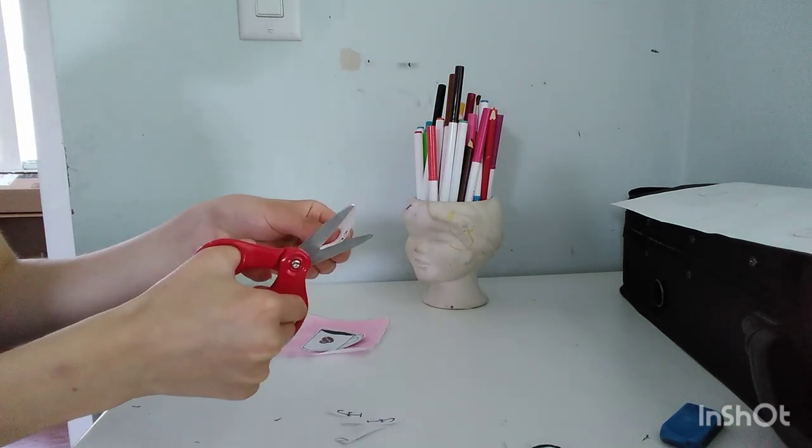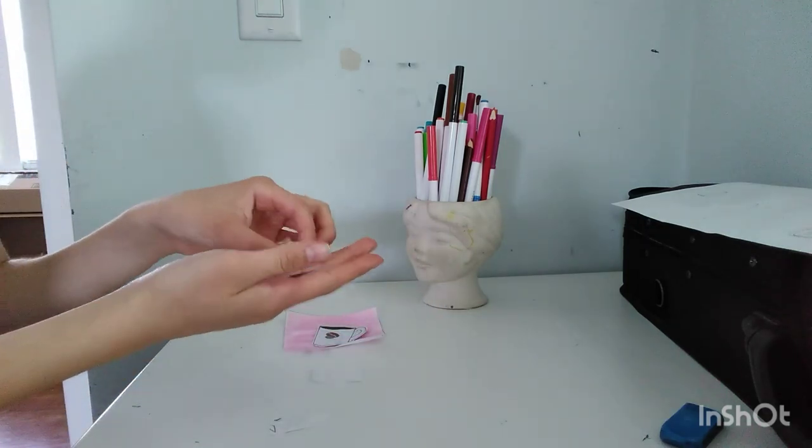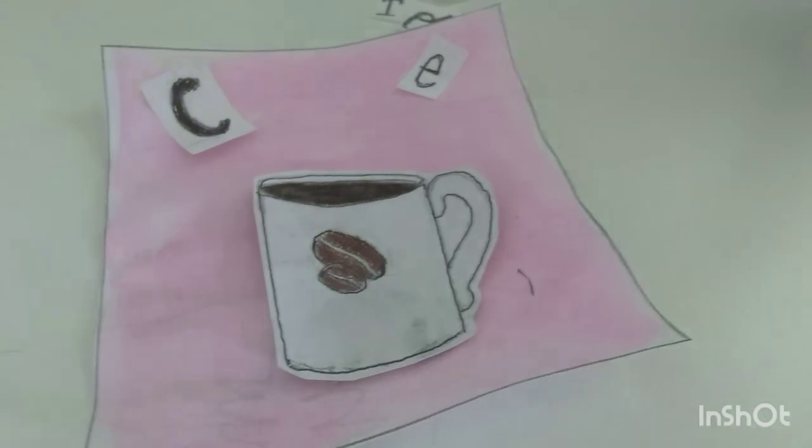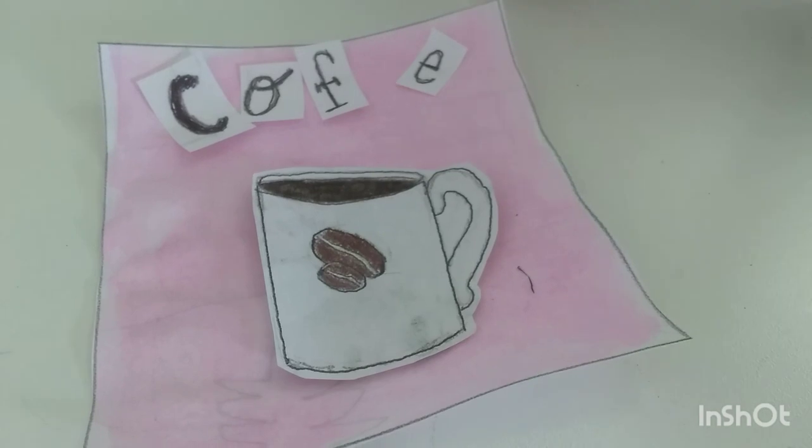When you're finished outlining them, cut these letters out. Now that you have your letters cut out, you can start placing them where you think you'll want them to be glued.